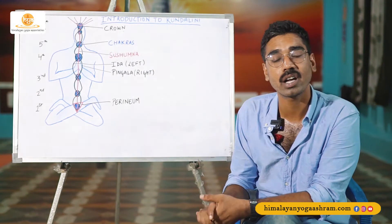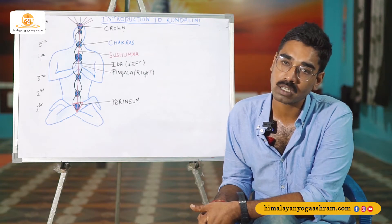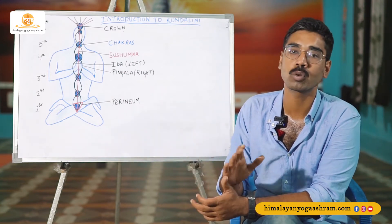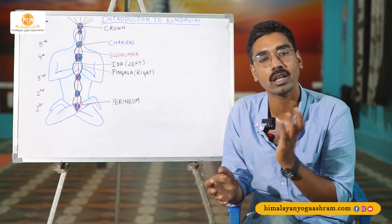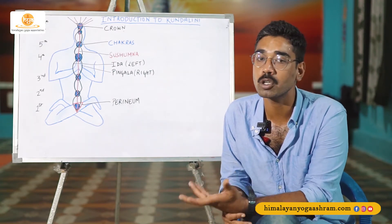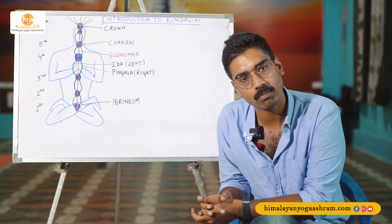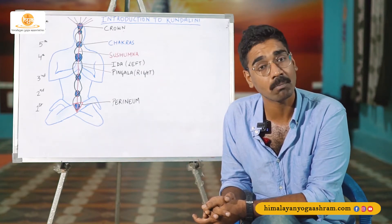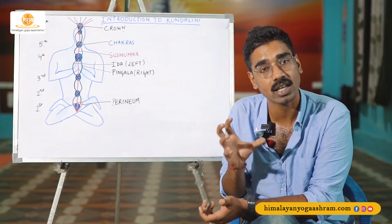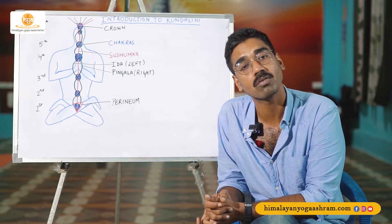There are basically three different Nadis inside the human body. One of them is Ida, one of them is Pingala, and the third one is Sushumna. Ida and Pingala Nadis are also known as the right and the left, the masculine and the feminine, the sun and the moon energy of a human being — because according to yogic science, every human being has both the genders inside of them, whether they are masculine or feminine, whether they are a man or a woman. Each one of us has both of these characteristics and energies inside, and that is why in mythologies, Shiva is considered incomplete without Shakti.